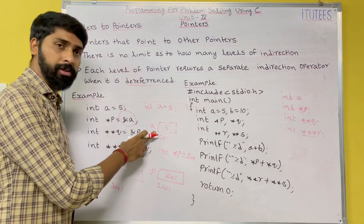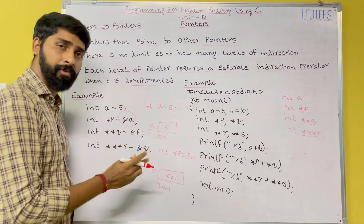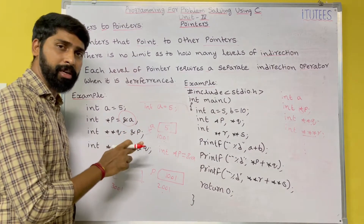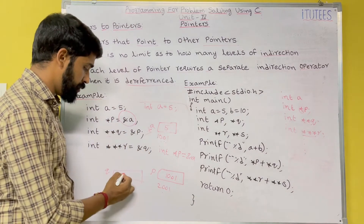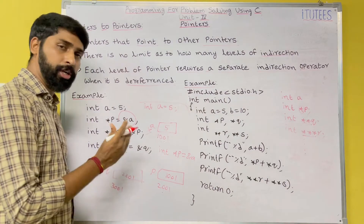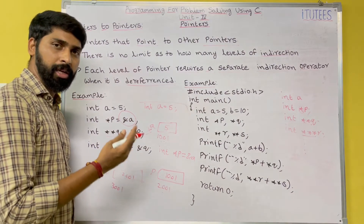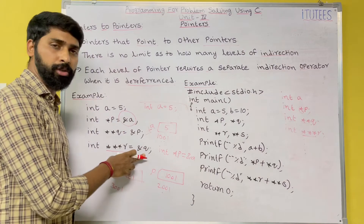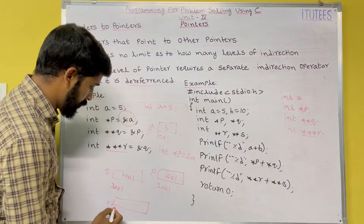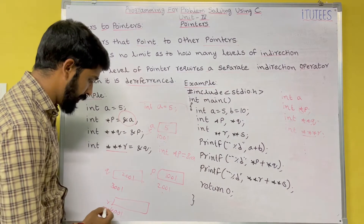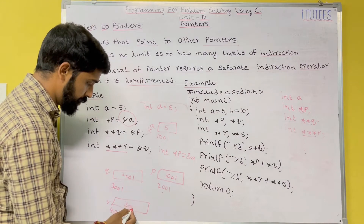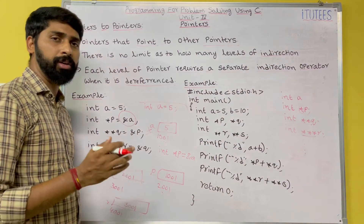So it is pointer to pointer, so it holds the address of another pointer. We can store `&p` — the address of `p` — in `q`. Similarly, `r` is a pointer to pointer to pointer which holds the address of pointer to pointer `q`, and `&q` gives address 3001 stored in `r`.